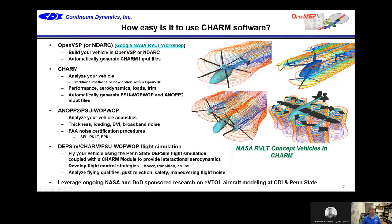Here are CHARM models of these aircraft. Once you've built an OpenVSP model, you analyze it with CHARM. You can do a full aeromechanics analysis, loads, and full aircraft trim. There's a finite element model in CHARM so you can look at blade loads and structural loads — all the things that rotorcraft manufacturers have needed for years. CHARM also automatically runs PSU-WOPWOP or generates ANOPP2 files for a full acoustics analysis, and you can run FAA noise certification procedures right out of these codes.